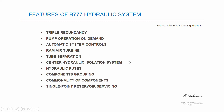Another feature is the central hydraulic isolation system. This system supplies reserve brake and steering function if there is a loss of central hydraulic system fluid. Another feature is hydraulic fuses, which protect against fluid loss in main gear steering, brakes, actuation, and flight controls. Similarly, components grouping in the Boeing 777 system places hydraulic reservoirs near pumps, supply pump filter modules close to each pump, and return filter modules close to each reservoir.